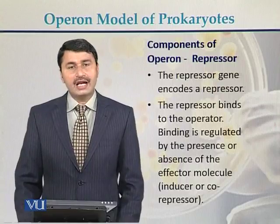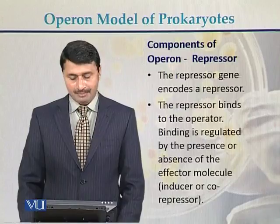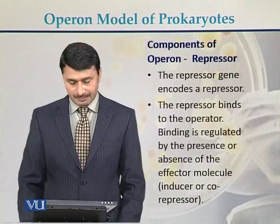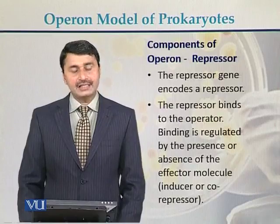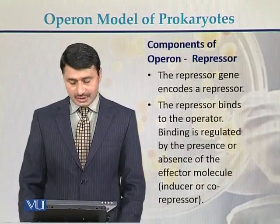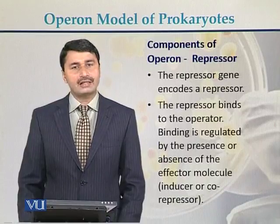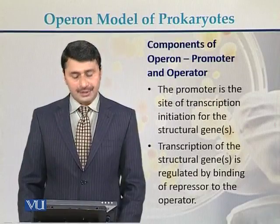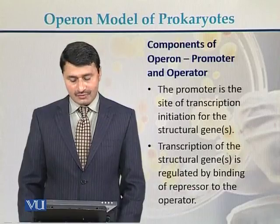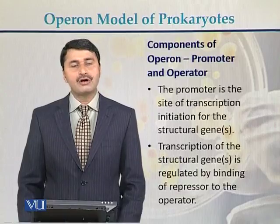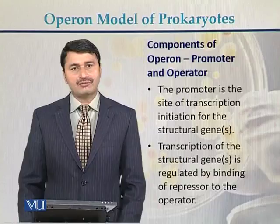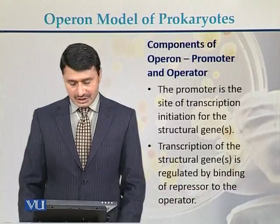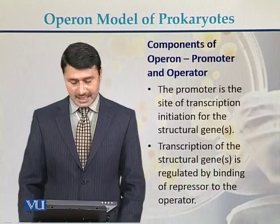Components of operon: there are three components. The first is the repressor — the repressor gene encodes a repressor protein, also called a regulatory protein. The repressor binds to the operator, and this binding is regulated by the presence or absence of effector molecules, which can be an inducer or a repressor. The promoter is the site of transcription initiation for the structural genes. Transcription of the structural genes is regulated by binding of the repressor to the operator.